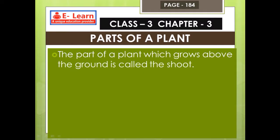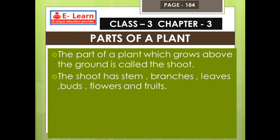The part of a plant which grows above the ground is called the shoot. The shoot has stem, branches, leaves, flowers and fruits, which grow above the ground.